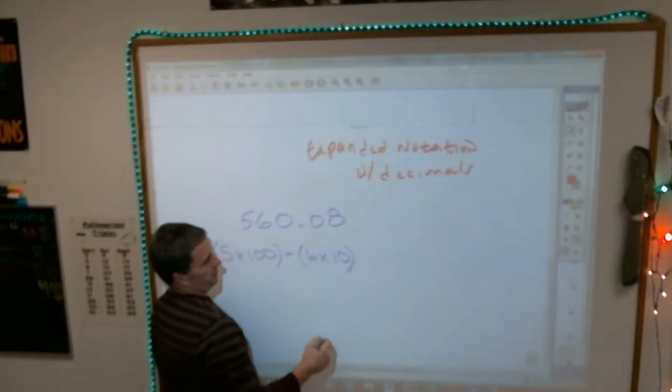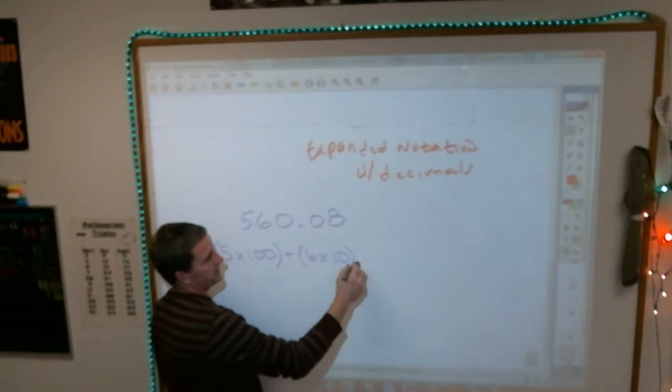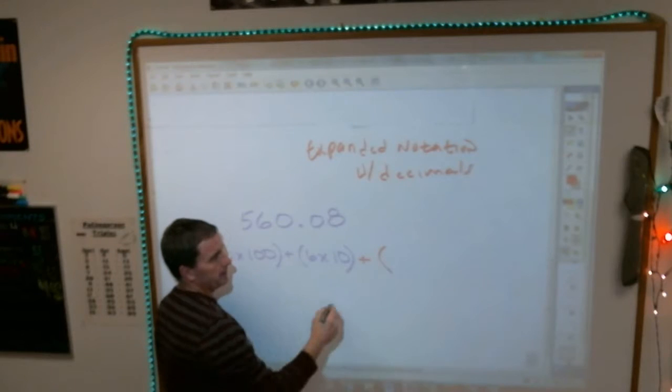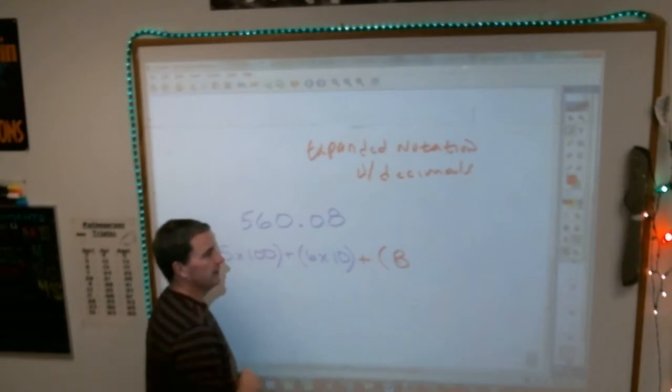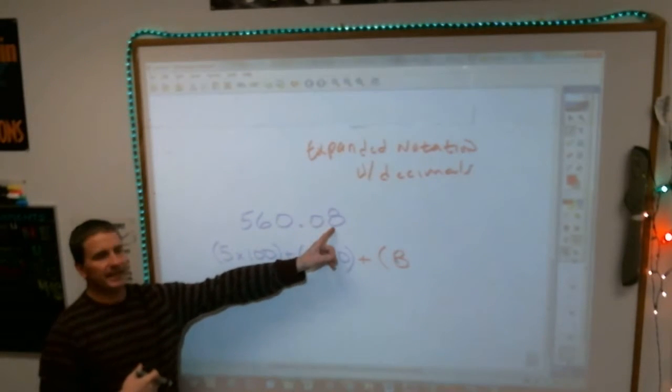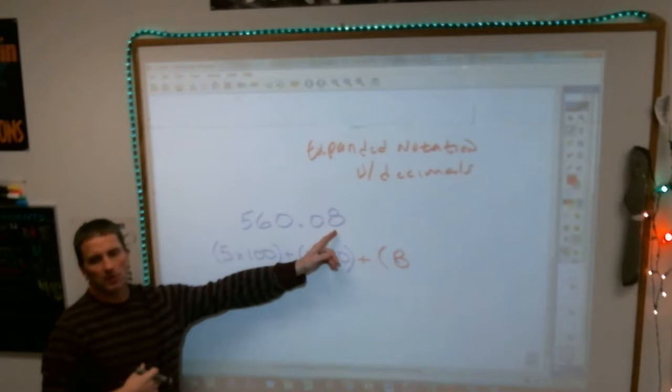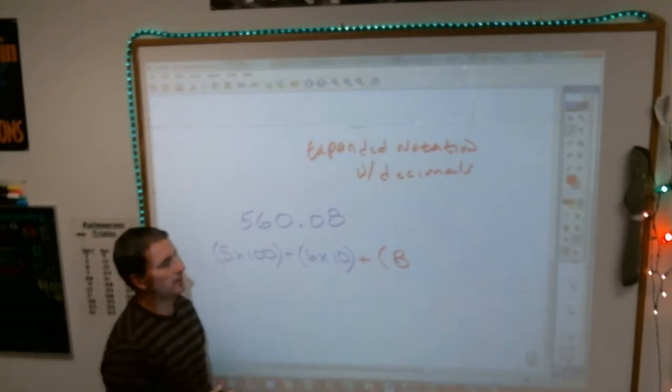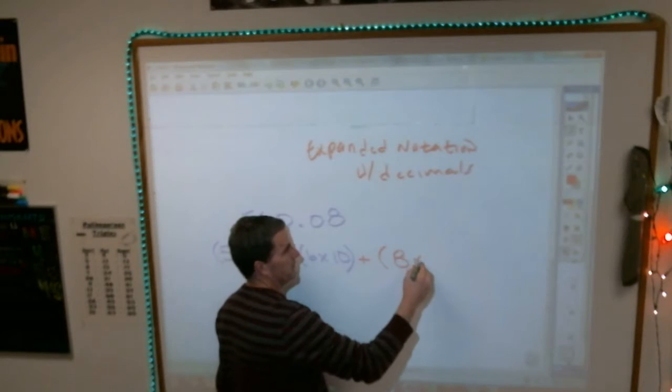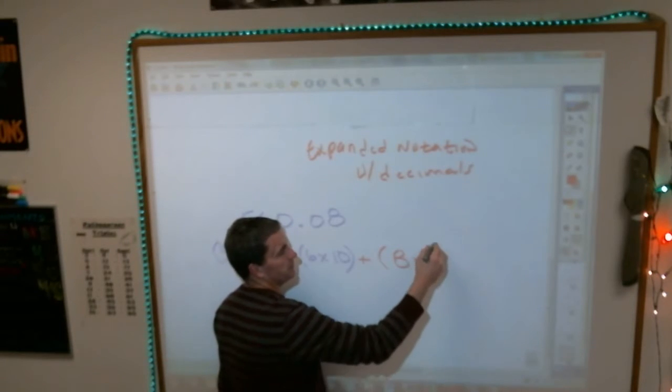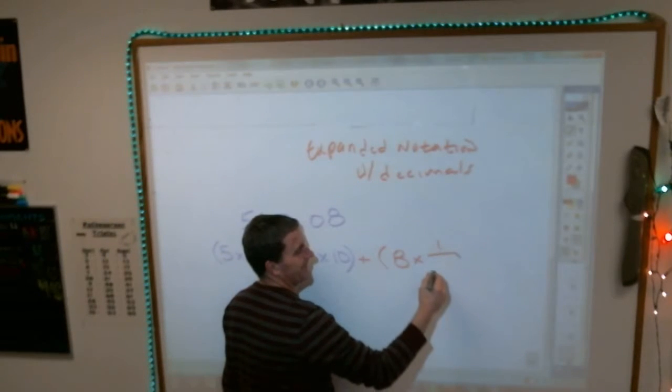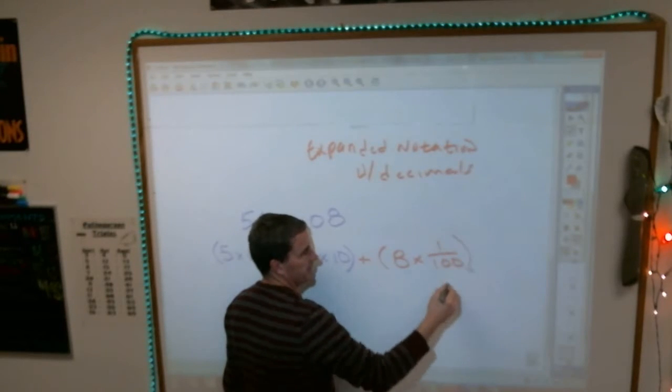Here is the way that works. Well, we've already got the 560, so we just need to add that .08. Well, that is an 8 in what place value? It's not the 100. It's the... Well, and the way you need to write it is you need to put it in fraction form. It's 8 in the 1 hundreds place.